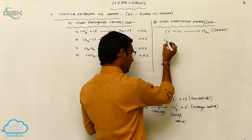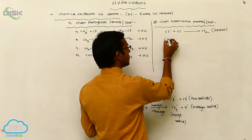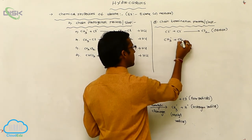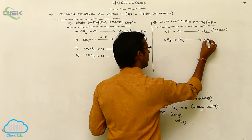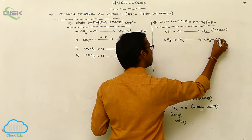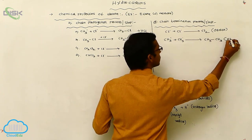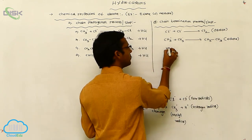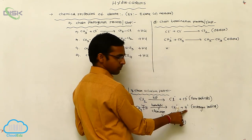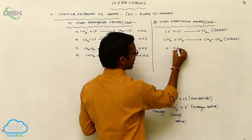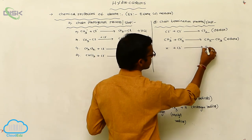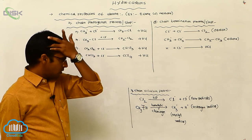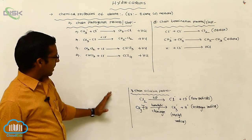Or in your methyl radical case, CH3 radical is reacted with CH3 radical and gives ethane. Or hydrogen radical is formed — this hydrogen radical is reacted with chlorine radical and it gives HCl. So this is your chain termination process, meaning the chain is extended and after extension of the chain it undergoes termination.